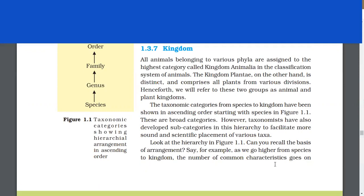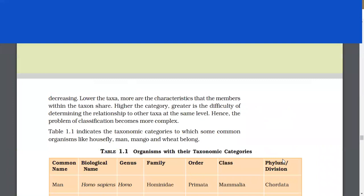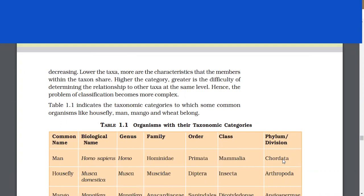These are broad categories. However, taxonomists have also developed subcategories in this hierarchy to facilitate more sound and scientific placement of various taxa. Can you recall the basis of arrangement? If we go higher from species to kingdom, the number of characteristics goes on decreasing. Lower the taxa, more are the characteristics that the members within the taxon share. Higher the category, greater is the difficulty of determining the relationship to other taxa at the same level. Hence, the problem of classification becomes more complex.